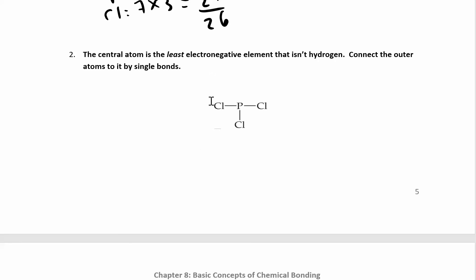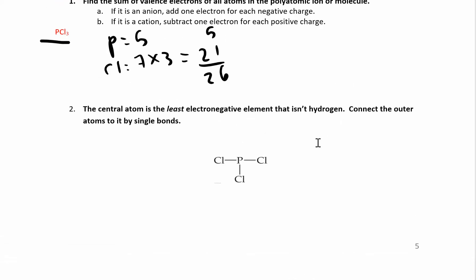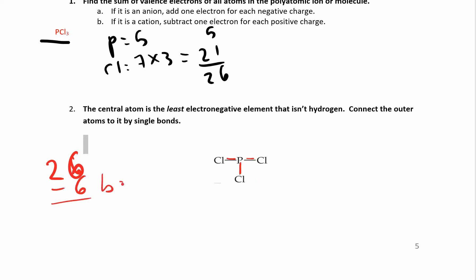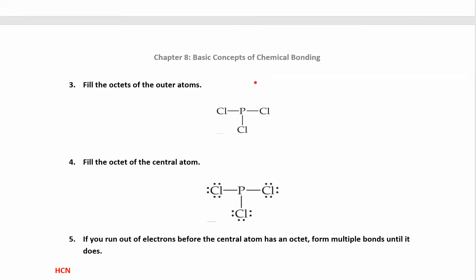The way you figure this out is you put the central atom — that's the least electronegative one that isn't hydrogen. Hydrogen never goes in the middle; it only wants to form one bond. So for PCl₃, put the phosphorus in the middle and the three chlorines around the ends. I have 26 electrons to start. I connect with single bonds and use up two electrons per bond — two, two, and two — so I used up six electrons in bonds, leaving me with 20 electrons.